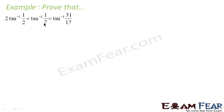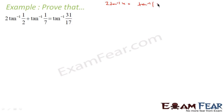Let's take one more example: 2 tan inverse 1 by 2 plus tan inverse 1 by 7 is equal to tan inverse 31 by 17. If you see here, there is a trick involved. It is not tan inverse plus tan inverse — it is 2 tan inverse. So first we have to convert this 2 tan inverse into tan inverse form and then use the formula. The formula is: 2 tan inverse x is nothing but tan inverse (2x by 1 minus x squared).